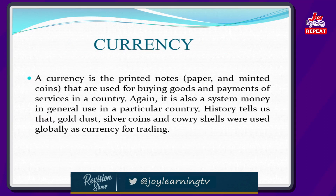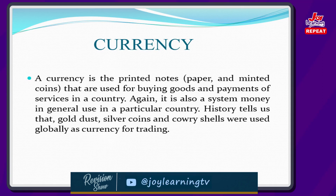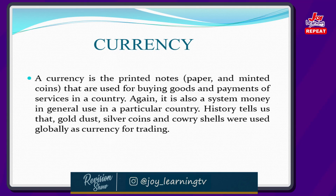So now we are going to explain what currency means. A currency is a printed note, paper, or minted coins that are used for buying goods and services or used for payment of services in a country. It is also a system of money that is in general use in a particular country. History tells us that gold dusts, silver coins, and cowry shells were used globally as currency for trading in the olden days.